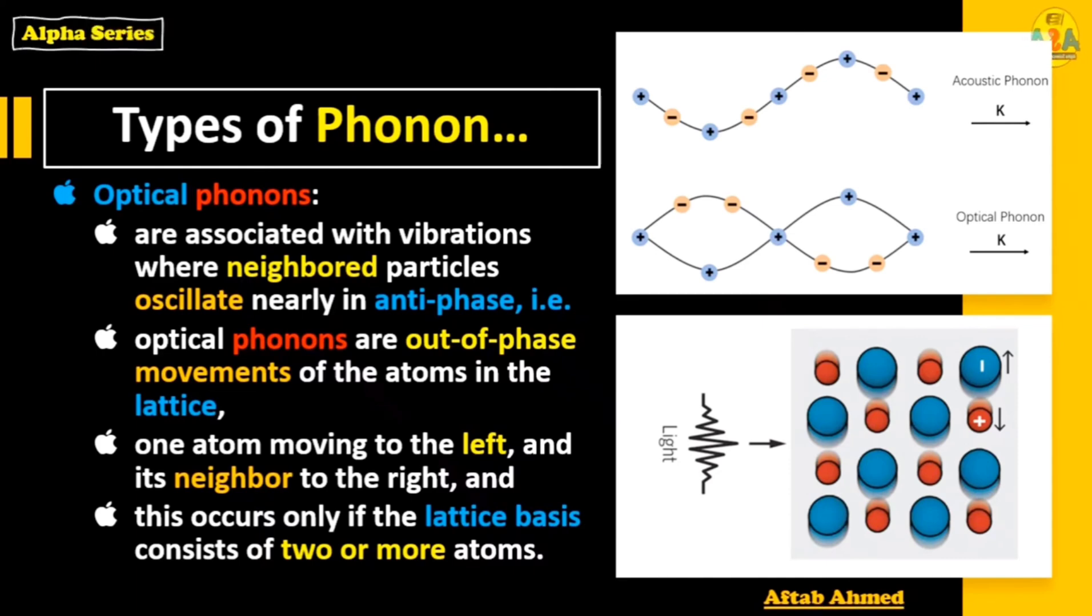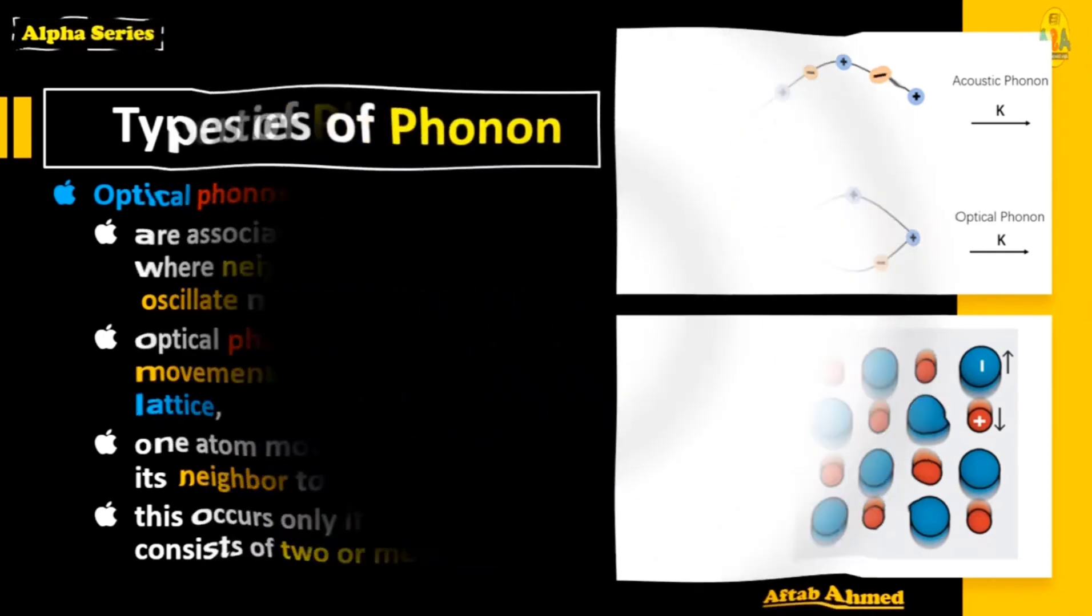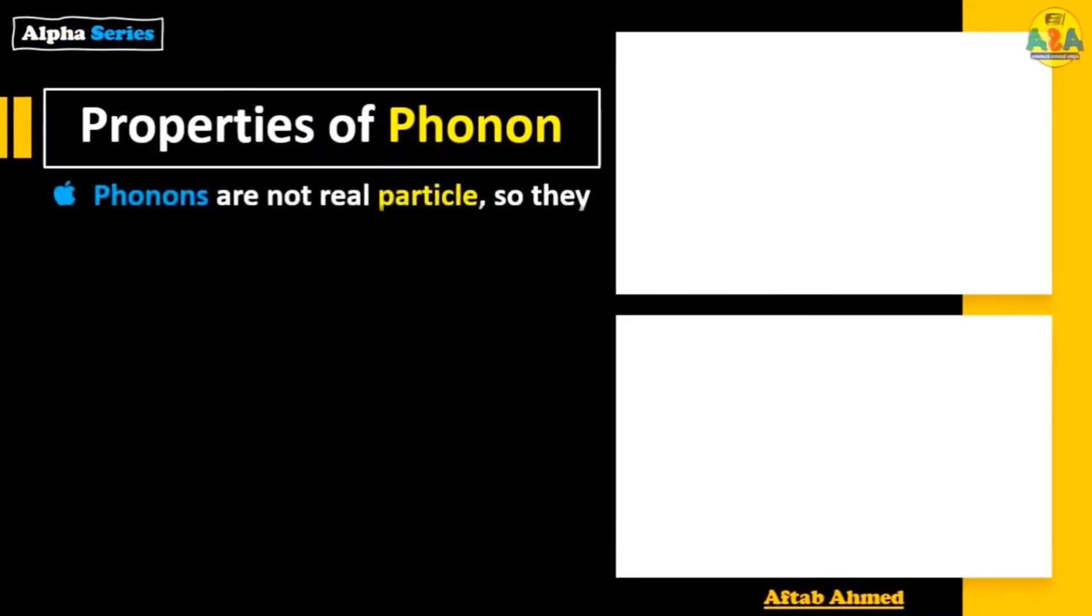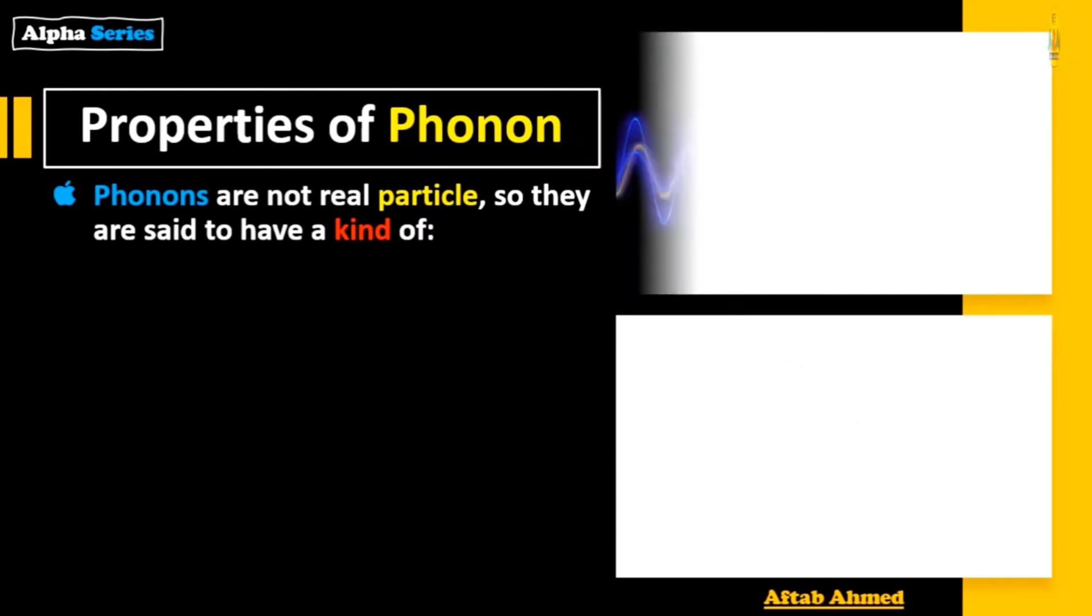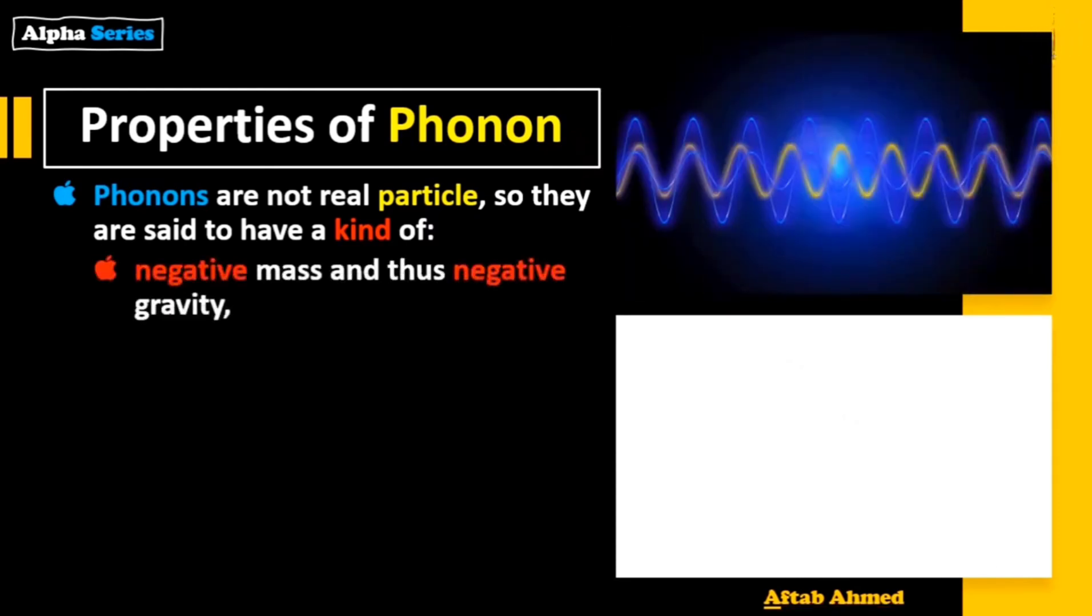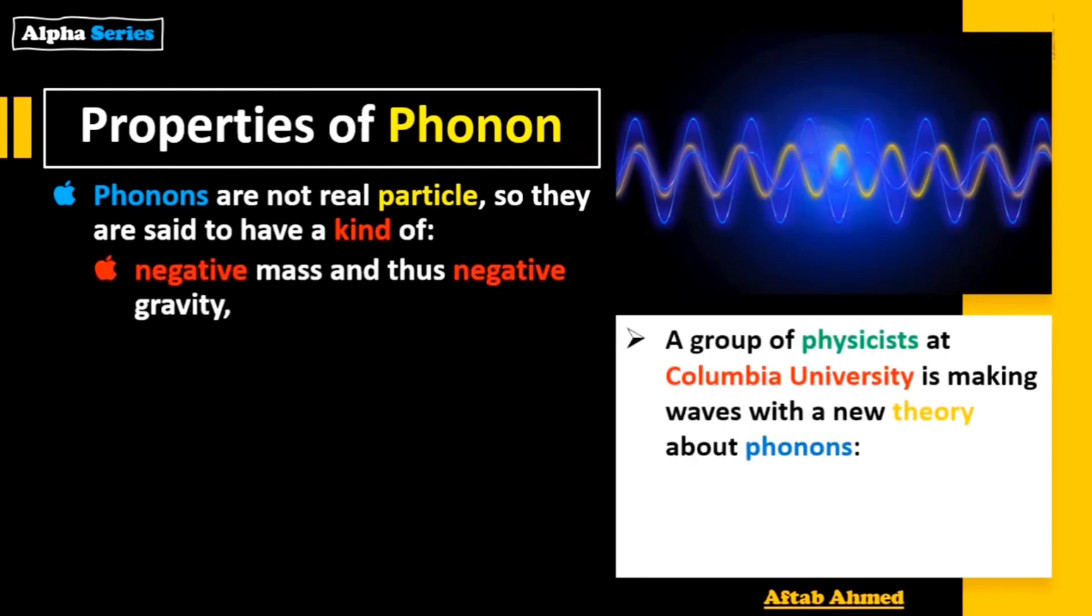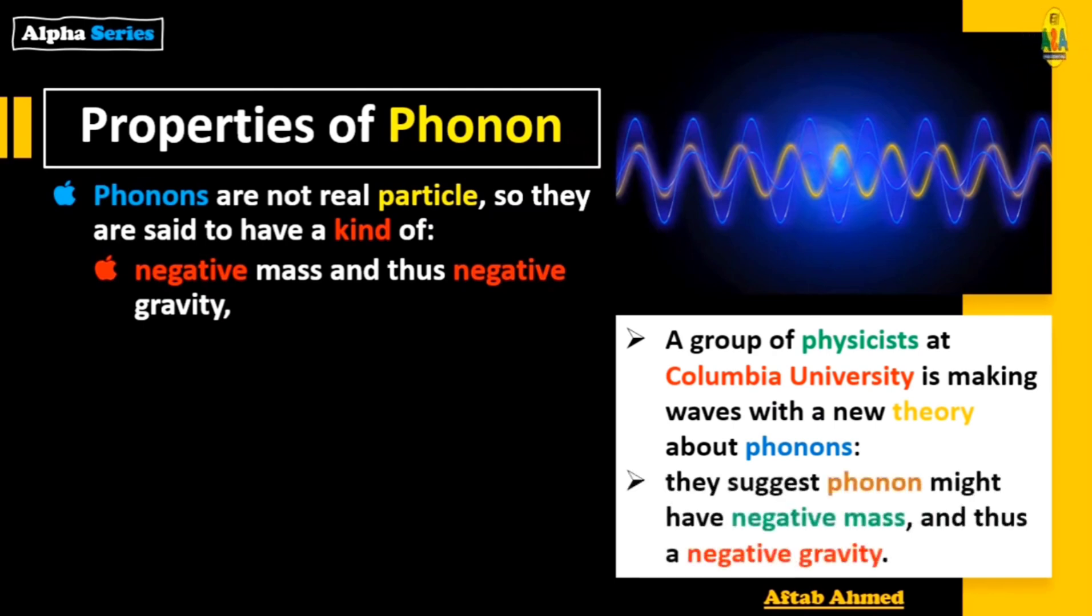Properties of phonon: phonons are not real particles, so they are said to have a kind of negative mass and thus negative gravity. A group of physicists at Columbia University has suggested that phonons might have negative mass and thus negative gravity.